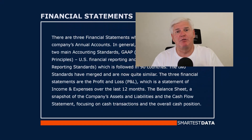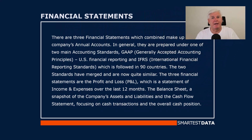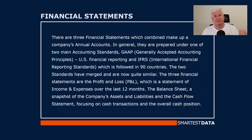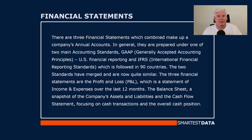In general, they are prepared under one of two main accounting standards: GAAP — Generally Accepted Accounting Principles — used in US financial reporting, and IFRS — International Financial Reporting Standards — which is followed in around 90 countries. The two standards have merged and are now quite similar.